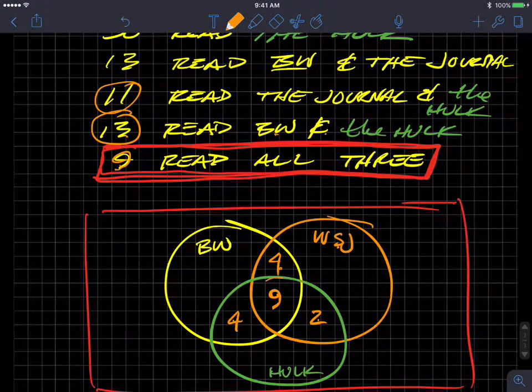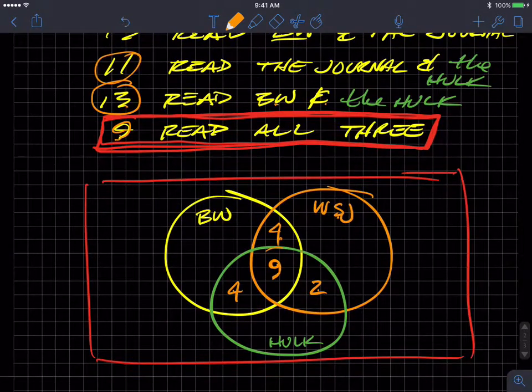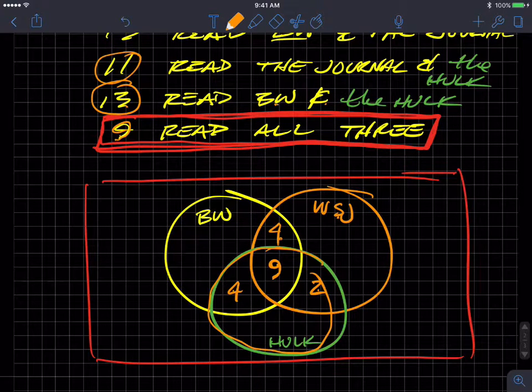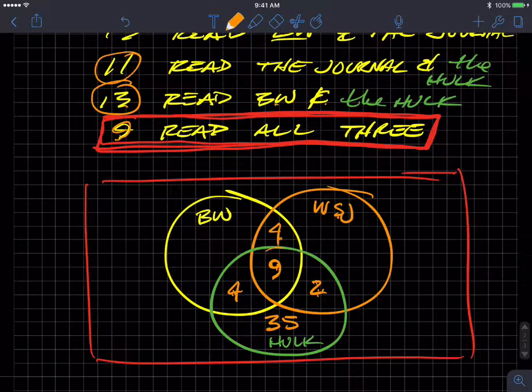And then we can step out and go to 50 students read the Hulk. Of course, the most highly intelligent of the group, 50 read the Hulk. So that means everything in this green has to add up to 50. But we already have, what, 9, 13, 14, 15 there. 9 plus 4 plus 2 is 15. So 50 minus 15 is what, 35? So that means 35 in the rest of this green portion. That's the Hulk only.